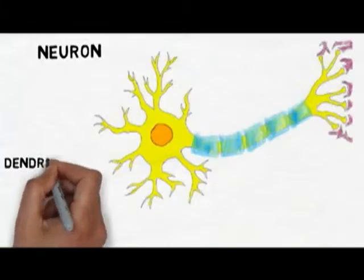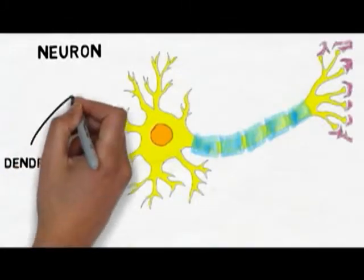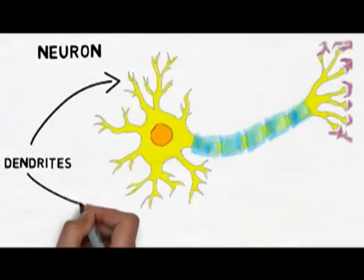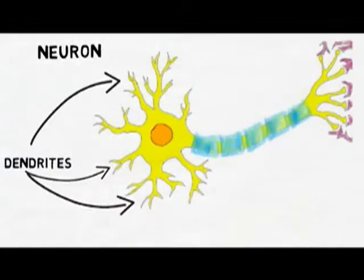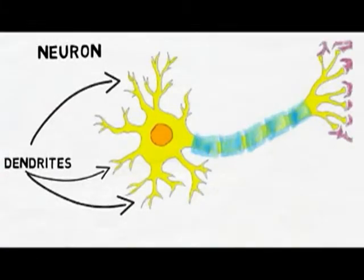The structures extending from the left side of the neuron that look a little bit like tree branches are called dendrites. Dendrites are the area where neurons receive most of their information. There are receptors on dendrites that are designed to pick up signals from other neurons that come in the form of chemicals called neurotransmitters.